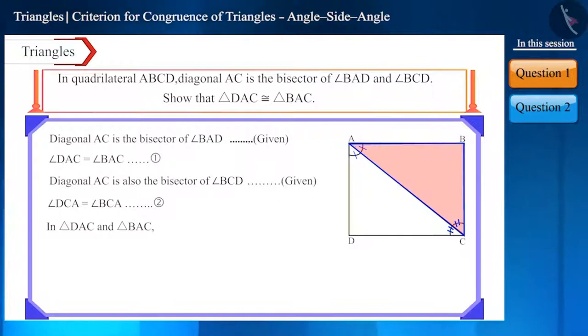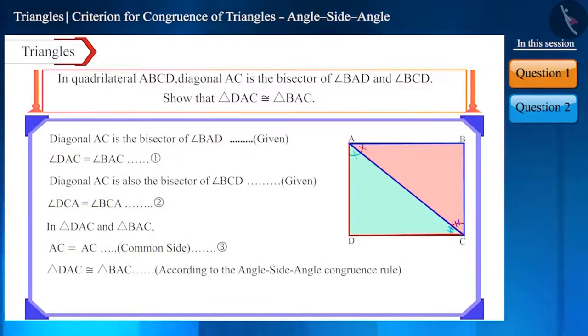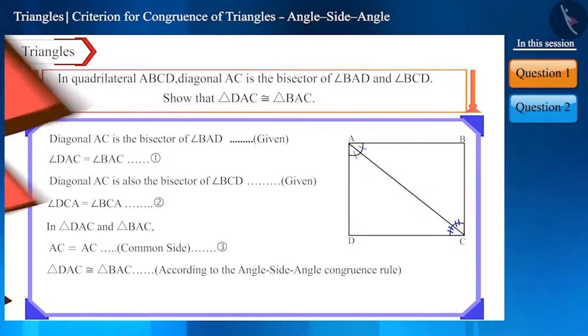Now look at triangle DAC and triangle BAC. Here these two angles are equal to each other and side AC is the common side. Notice that this side is the interior side of the two angles. From equations 1, 2, and 3, we can say that these two triangles are congruent as per ASA or the angle-side-angle congruence rule for triangles.